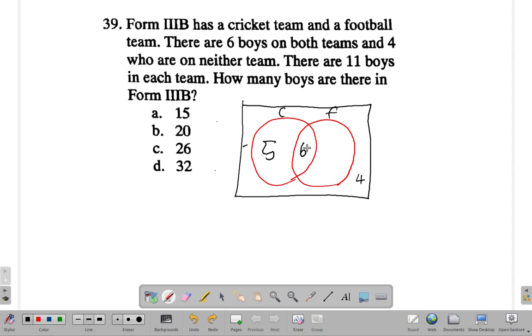Then, you already have, they say, eleven on each. So, the football team has eleven too. You already have the six that are also on the cricket team. Then, you have six, seven, eight, nine, ten, eleven. That's five more.